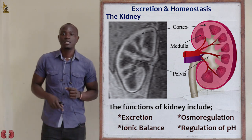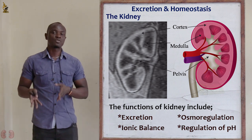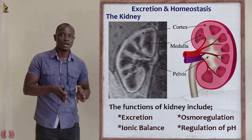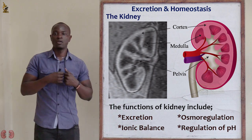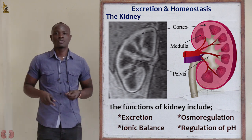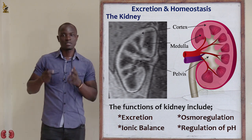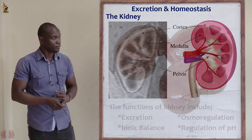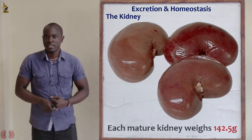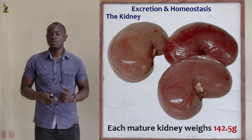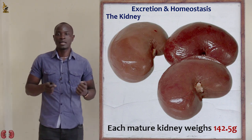Another function of the kidney is regulation of pH in the body by reabsorption of water or by not absorbing water at all, so as to maintain a constant pH of the body. Regarding weight, each kidney weighs approximately 142 grams.